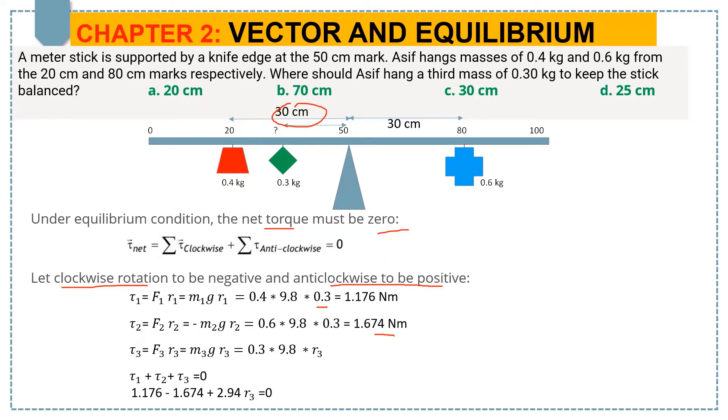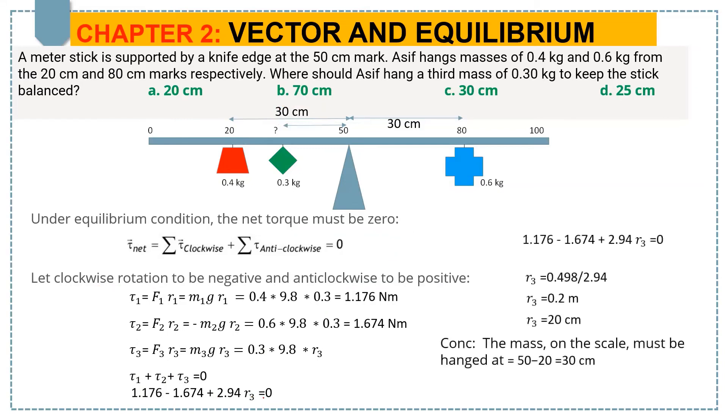Now, according to the equilibrium condition, all torques equal zero. So τ₁ = 1.176, τ₂ = -1.674, plus 2.94R₃ = 0, which further can be written as you can see here: